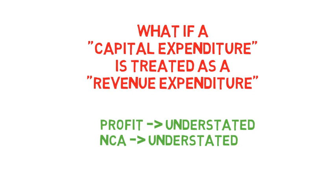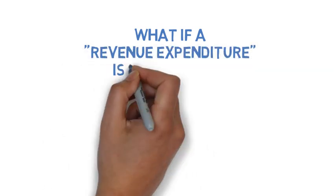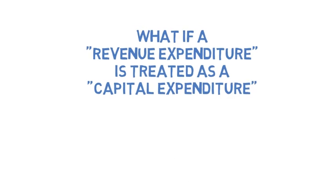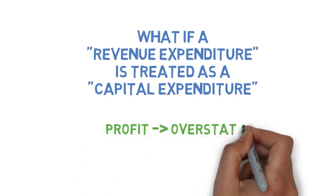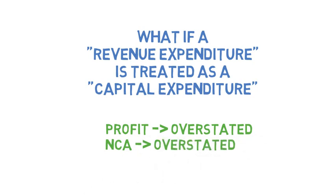Alternatively, what happens if a revenue expenditure is charged as a capital expenditure? For example, we fueled up our vehicle but instead of recording it as a motor expense, we treated it as a motor vehicle. The motor vehicle account is then overstated, and because we did not charge the expense, our profit was also overstated — so both are overstated.